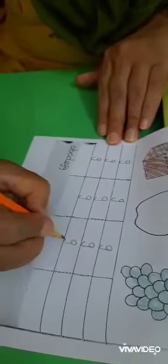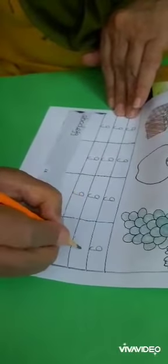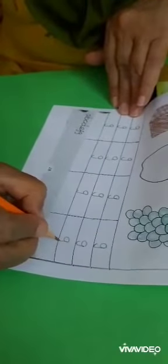Gloves, goat, gate, and glass. Children, complete this page and send your videos and photos to Bharti ma'am.